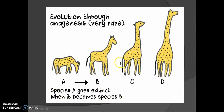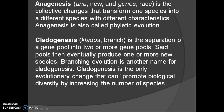Species A converts to B and A goes extinct; B converts to C and B goes extinct; C converts to D and C goes extinct. So in anagenesis there is extinction of the parental species, which is why it is rare. A key point: the number of species remains the same in anagenesis. The word 'ana' means new and 'genus' means race — it is the collective changes that transform one species into a different species, also called phyletic evolution.